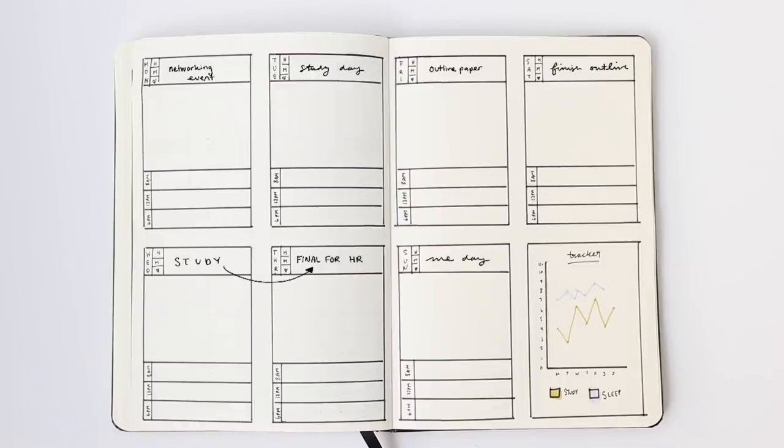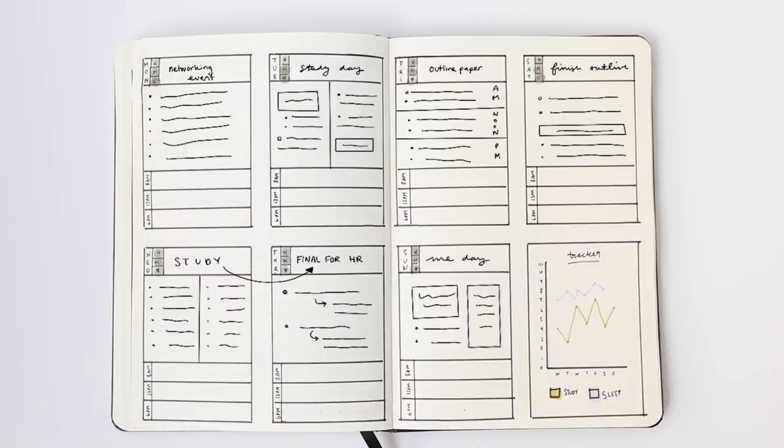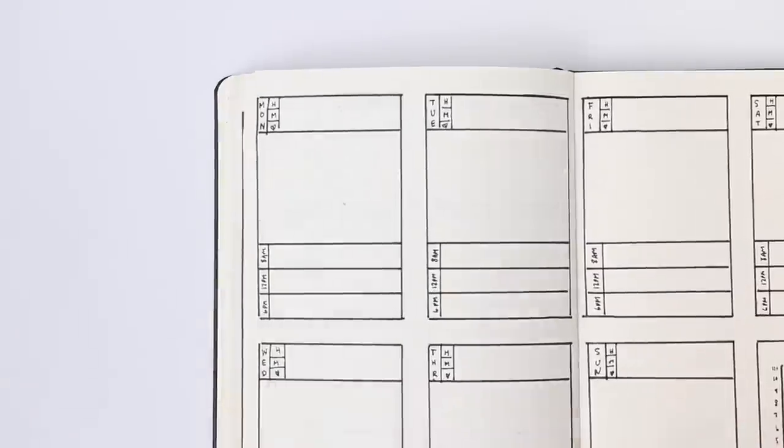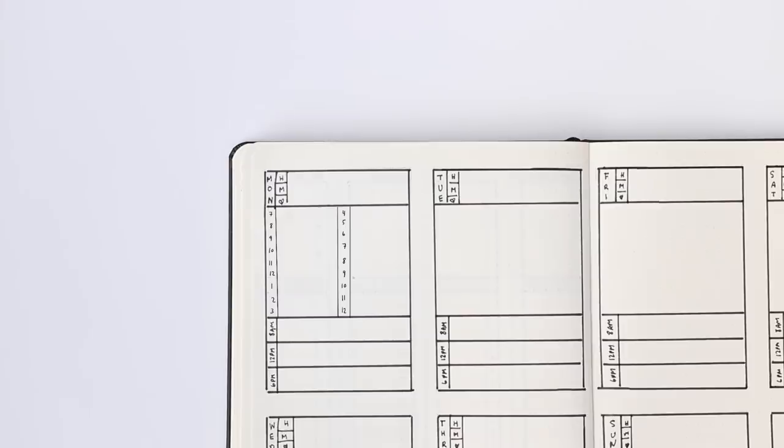The one neat aspect about this weekly spread versus the first one that I showed you is that the section where you write your to-dos, that big chunky middle section as you can see, can be designed in many different ways. You can make it a list, you can make it an hourly schedule, you can use blocks within it.